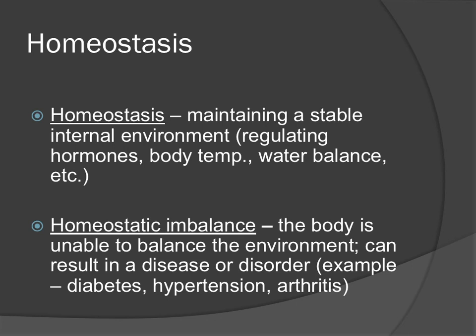Homeostasis is maintaining a stable internal environment — the tendency of an organism or cell to regulate its internal conditions, usually by a system of feedback controls, to stabilize health and functioning. For example, we regulate body temperature to maintain 98.6°F: if overheated, we sweat; if too cold, we shiver. Homeostatic imbalance is any time the body is unable to maintain that balance — this is how we get conditions like diabetes, hypertension, or arthritis.